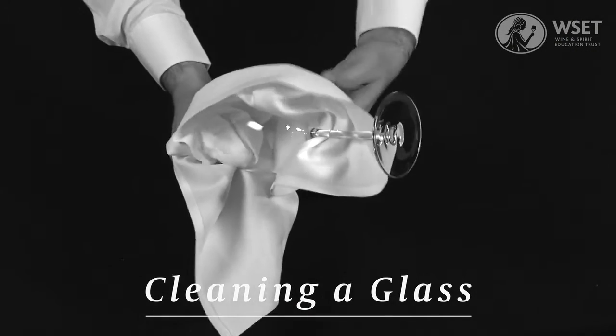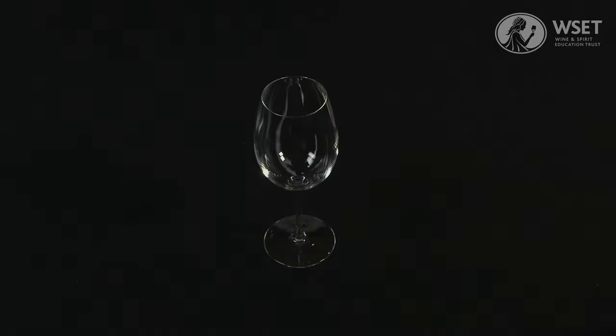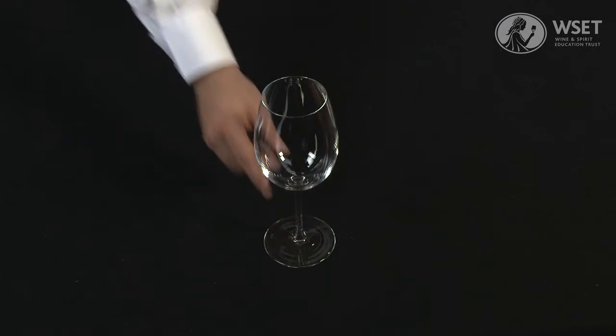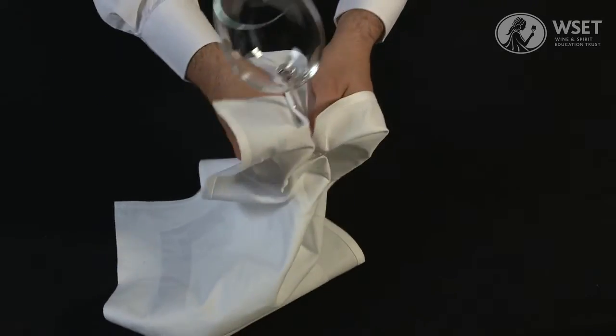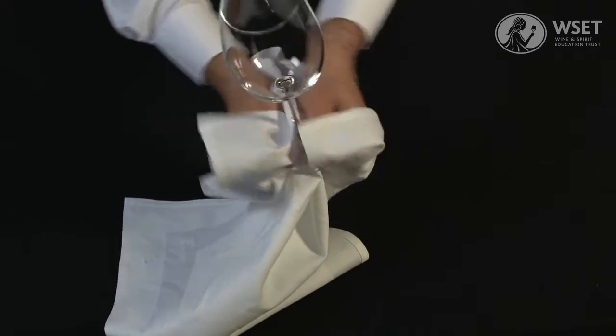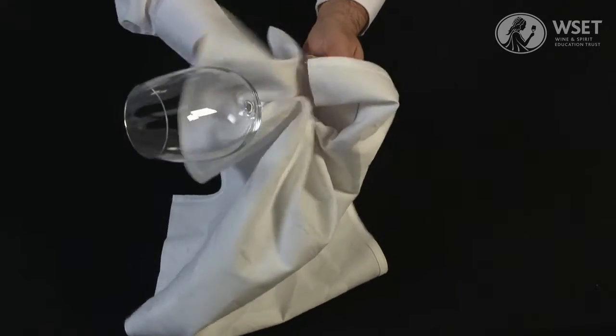Cleaning a glass. First, pick the glass up by its stem. Then, using a lint-free cloth, clean the foot of the glass before moving onto the stem.